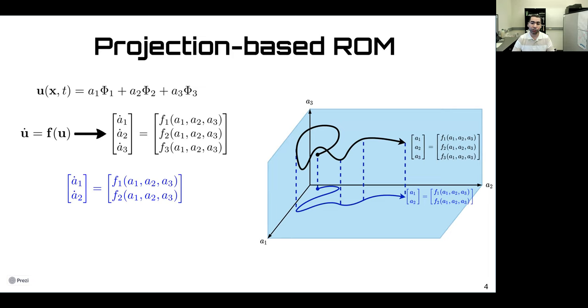Now suppose that we seek rank-2 approximation of the flow field to reduce the computational cost. We get an equation for a1 and a2, but we introduce a projection error or representation error, because u now will be approximated as a1 phi1 plus a2 phi2. There will be no phi3 component.